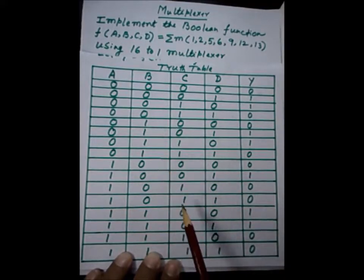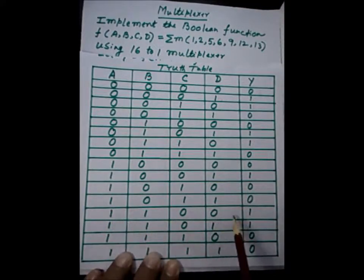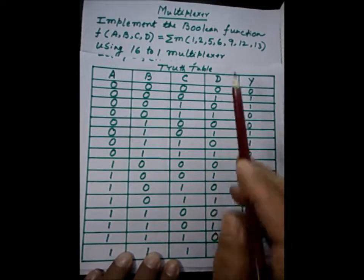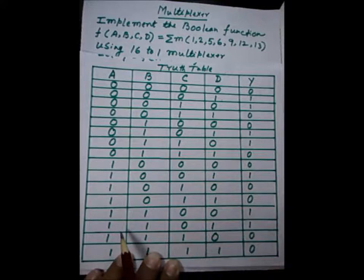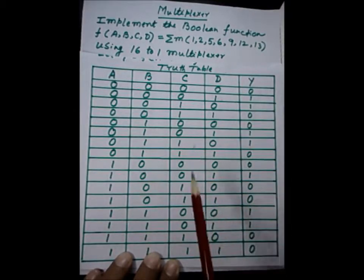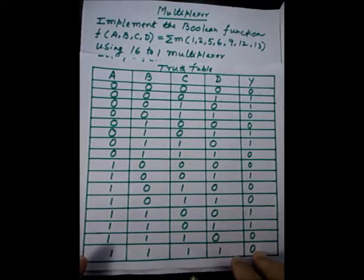For example, the row 1,1,0,0 has a decimal equivalent of 12, and 12 is present in the minterm list, therefore we put output 1. Similarly, 1,1,0,1 has decimal equivalent 13 and 13 is also present, so we put output 1. The remaining rows are assigned 0. This is the simplest way to prepare the truth table.